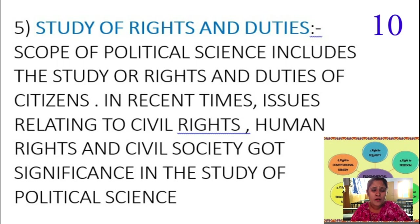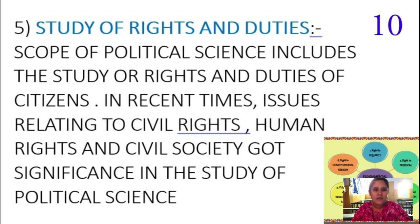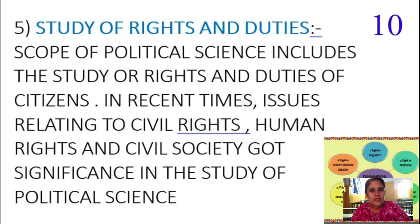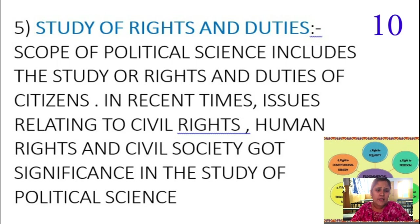This type of analysis can be given only by political science. By studying political science, we can analyze what type of rights are there and what duties citizens have to obligate. The next scope is the study of national and international issues. National means internal issues; international means issues between one nation and another. The scope of political science enables us to study national and international affairs.